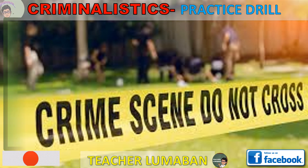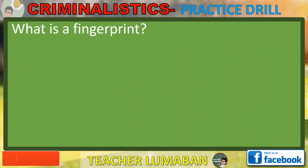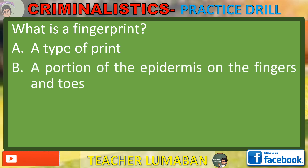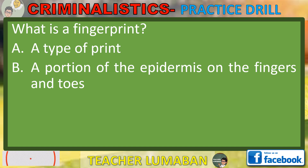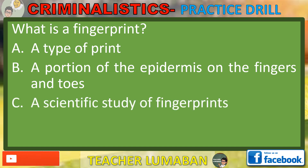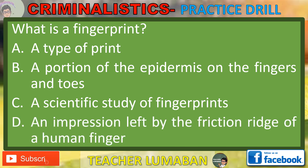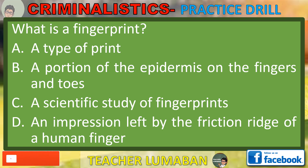What is a fingerprint? Letter A: A type of print. Letter B: A portion of the epidermis on the fingers and toes. Letter C: A scientific study of fingerprints. Letter D: An impression left by the friction ridge of a human finger. Choose the suitable answer based on the given choices.